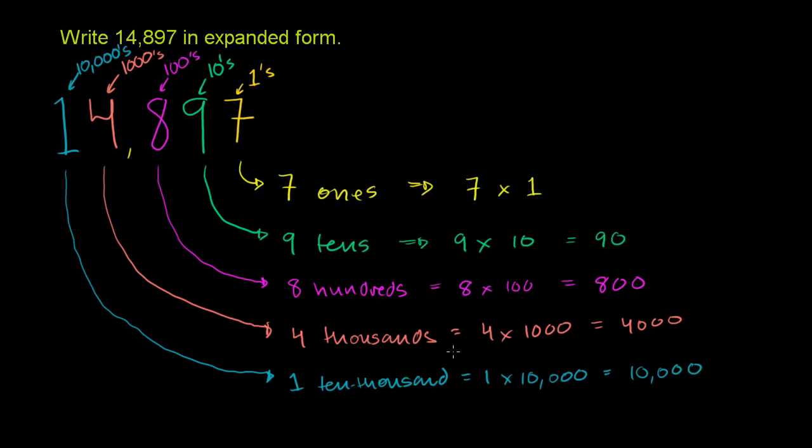So when they ask us to write it in an expanded form, we could write 14,897 literally as the sum of these numbers, of kind of its components. Or we could write it as the sum of these numbers. And actually, let me write this. This top 7 times 1 is just equal to 7.